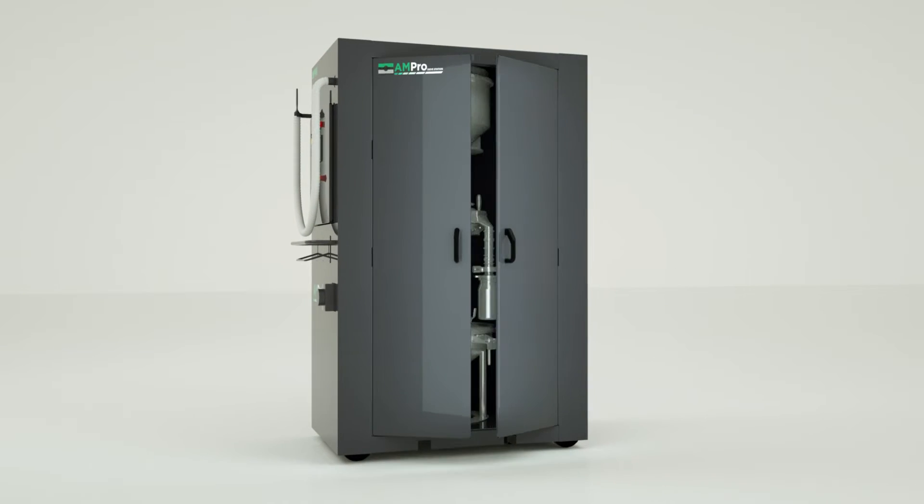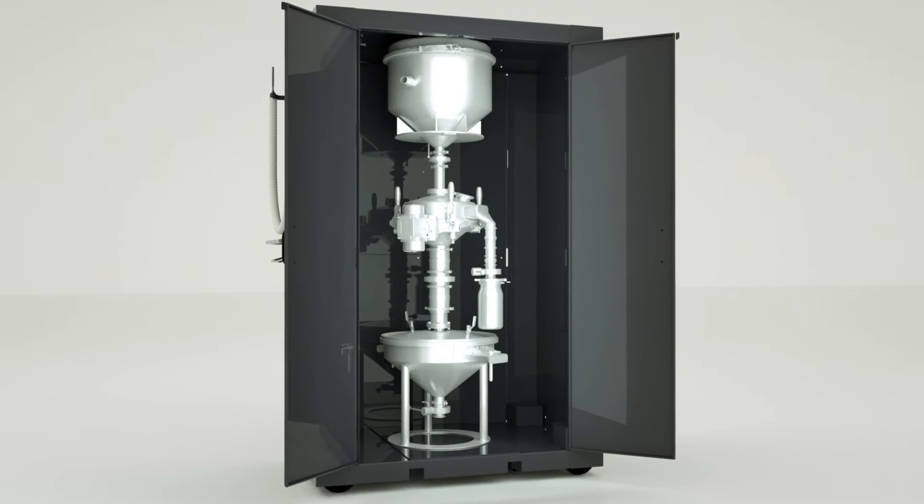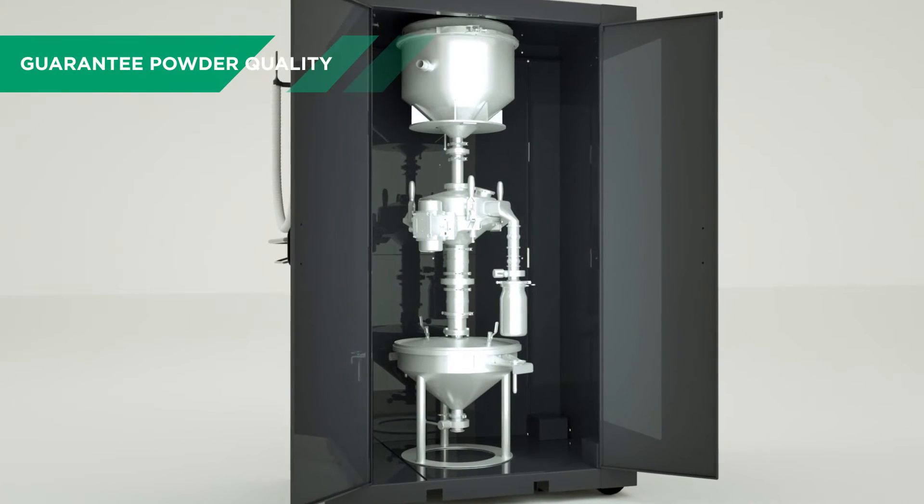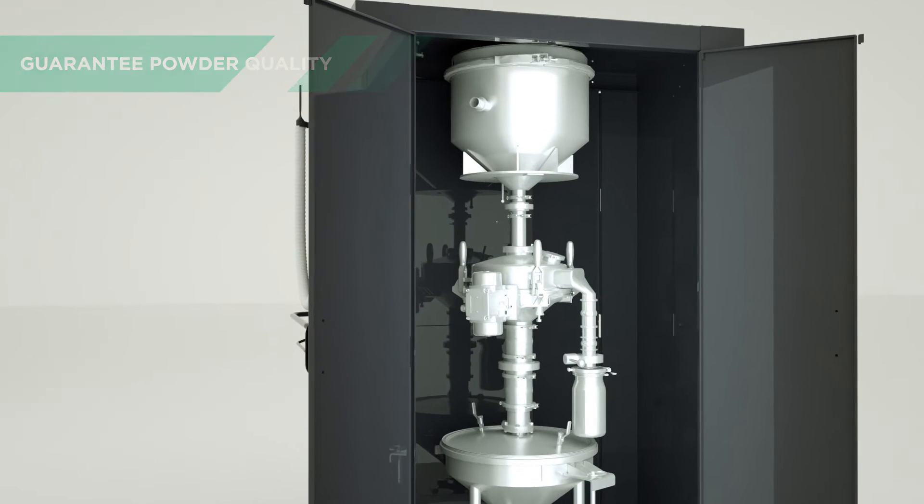There are two key areas of powder handling. Firstly, the Russell Ampro sieve station can be used to guarantee the quality of virgin powders before entering the production process, ensuring they are qualified before use.